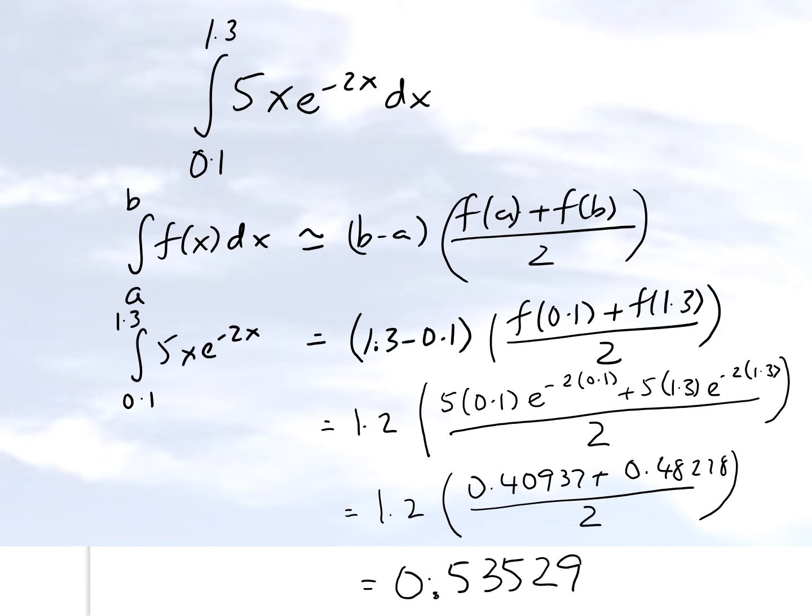This is what we get by using the single application trapezoidal rule as the value of the integral. This was part A. Let's go to part B where we have to find the true error as well as the relative true error.